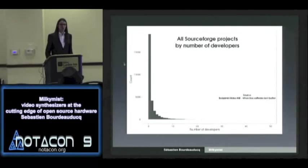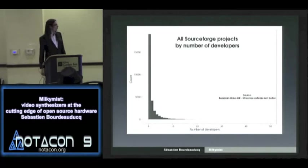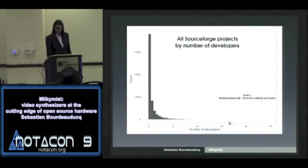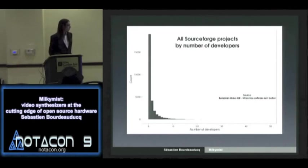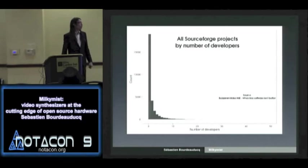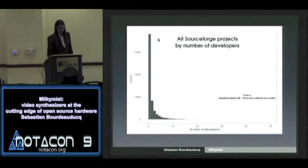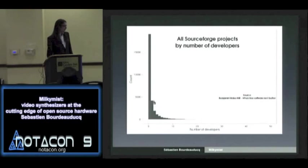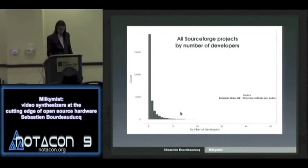If you look at Milky Mist from an open source project perspective, we have 15 active developers. To put that in perspective, I refer you to a talk by Benjamin Mako Hill entitled 'When Free Software Isn't Better,' which makes the point that most open source projects are not as collaborative as people think. If you look at all SourceForge projects by number of developers, the vast majority have exactly one developer, and the count drops to zero very fast as you go higher. The Milky Mist project is well up that scale.